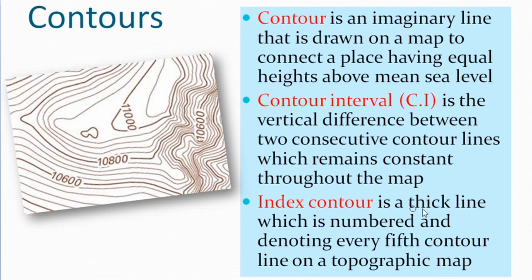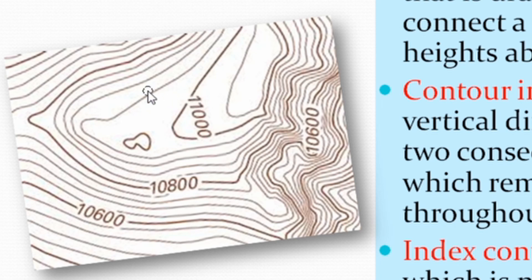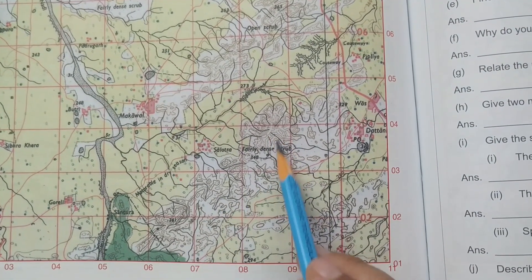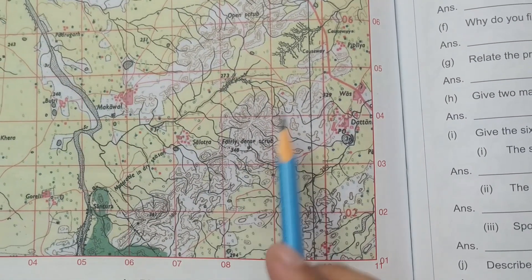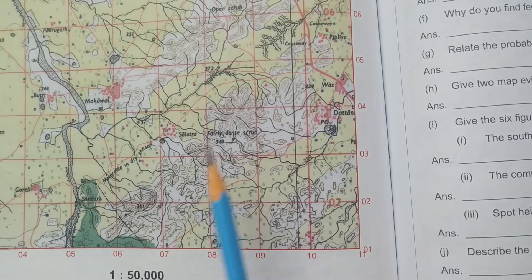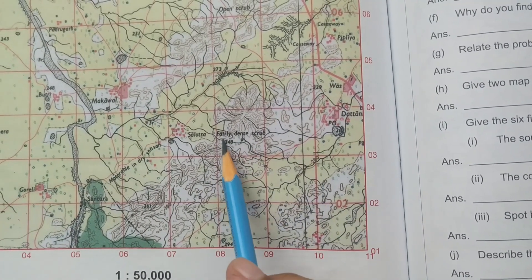Index contour is a thick line which is numbered, denoting every fifth contour line on a topographic map. If you look closely, the fifth line is a darker color — 1, 2, 3, 4, and the fifth line. That fifth line is your index contour. So after every four lines you will get that fifth line which is drawn a bit broader and darker. Now let me show you how the contour map appears on your topo sheet. These brown lines are your contour lines. You won't see contour lines everywhere — the contour line depicts the elevated land, meaning the land is a bit higher. The height of the contour is also given.